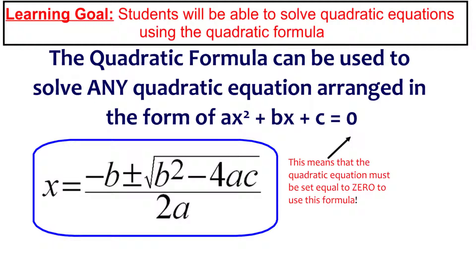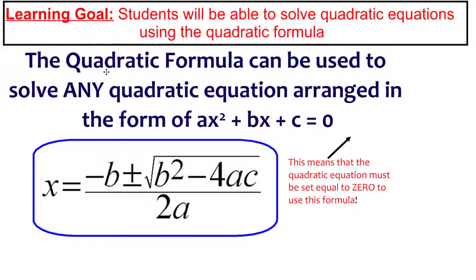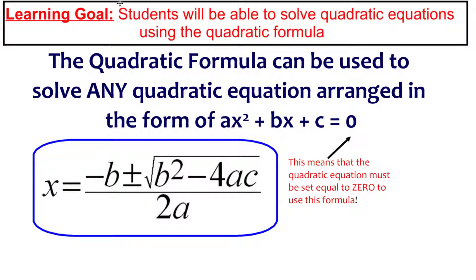We're going to solve quadratic equations using the quadratic formula. This is something you should have seen before, so I'm just going to present you with the formula. The quadratic formula comes from standard form of a quadratic equation, which looks like ax² + bx + c = 0, where a is in front of x squared, b is in front of x, and c is the constant term with no x values attached. When you use the quadratic formula, the equation must be set equal to zero, because that's how the formula was created.